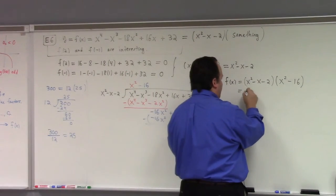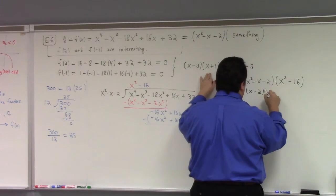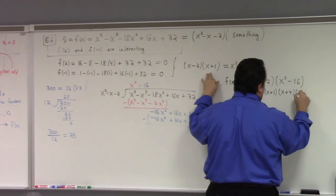And now we can factor, right? Because we already know, the first one factors is what? x minus 2, x plus 1, and the last one's difference of squares. So that's x plus 4, x minus 4.